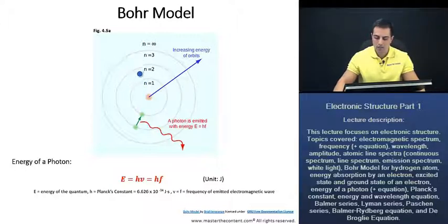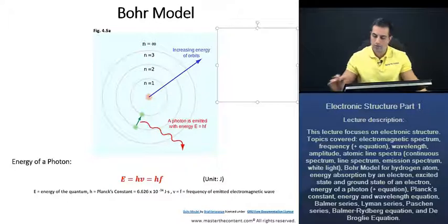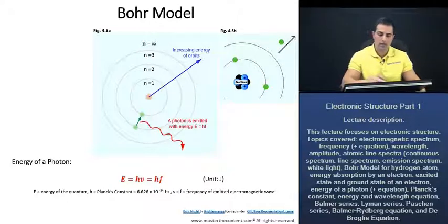The electron doesn't have to go to n equals 2, it can go from n equals 1 to n equals 3 or n equals 5, or even furthermore. The electron, if it is ionized, meaning it absorbs enough energy, can leave the atom completely.